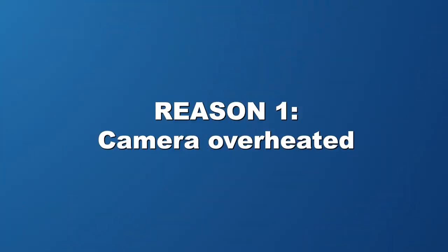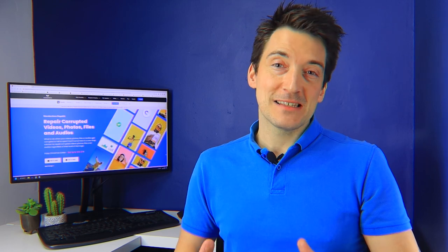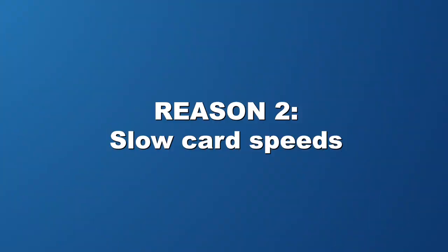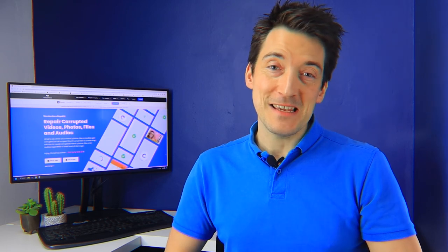Reason 1: It's possible that your camera has overheated. If your Canon camera becomes too hot, it may turn off by itself and stop recording automatically. Reason 2: The camera's memory card can't handle particularly high quality videos. Videos of high quality, such as those shot by Canon cameras, cannot be recorded on a card with a slow write and read speed.